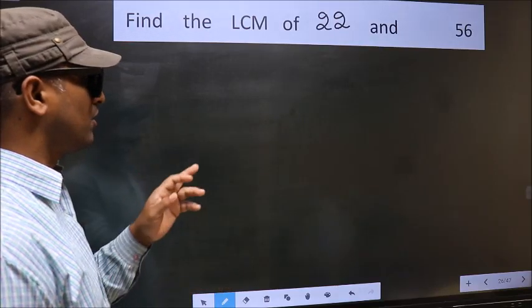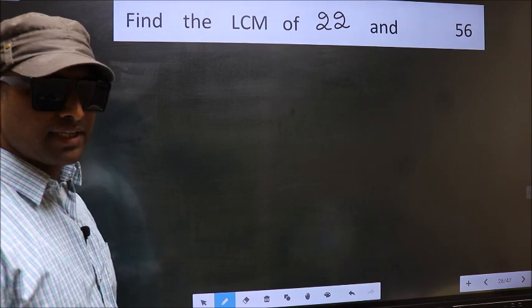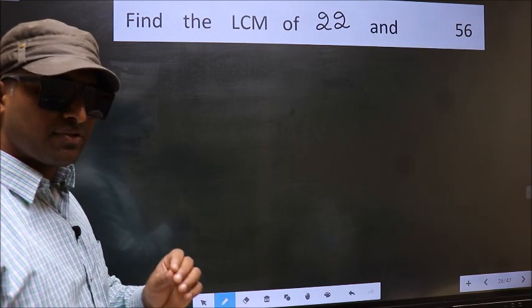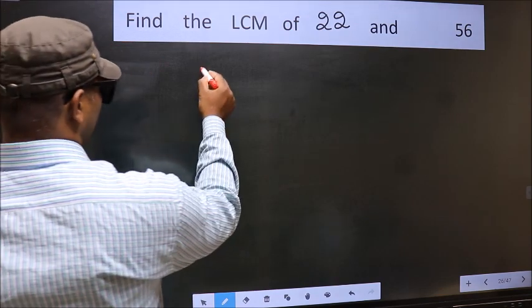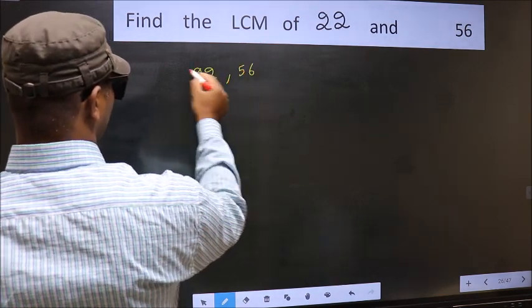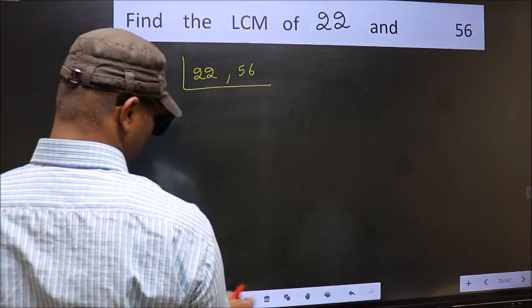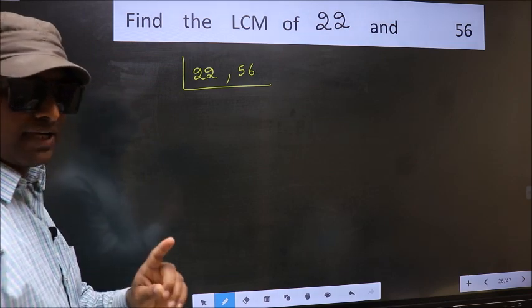Find the LCM of 22 and 56. To find the LCM, first we should frame it in this way: 22, 56. This is your step 1.